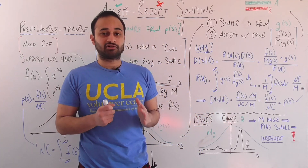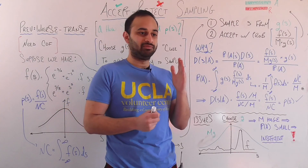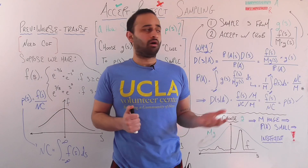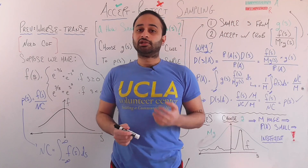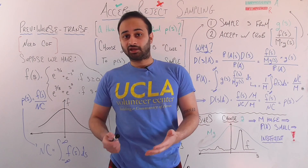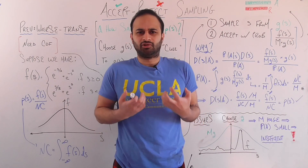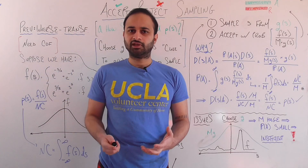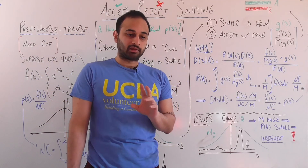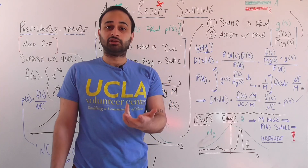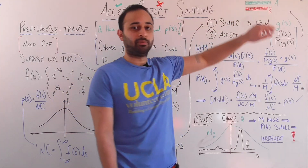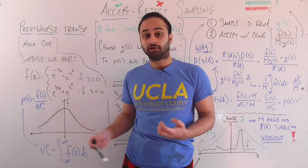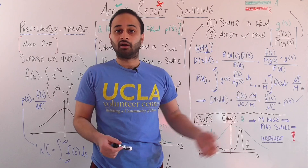When I first learned this method, it seemed like magic. It doesn't seem like anything in it inherently has to do with P of S, so how can we say that all the accepted samples are actually a draw from P of S? First I'll prove it mathematically, and then after that I'll talk about more intuitively why this works. What we want to prove is that if we look at all the samples we have accepted, the density of those samples is actually P of S.